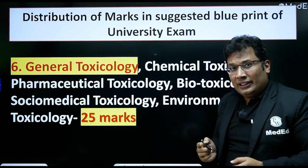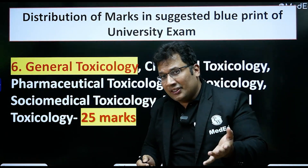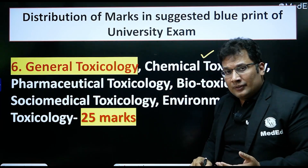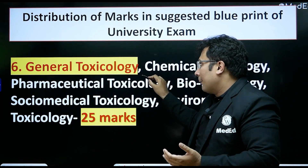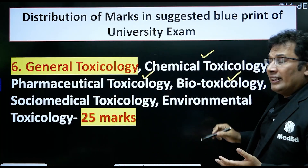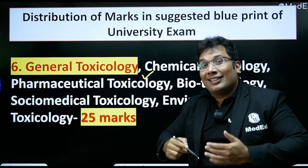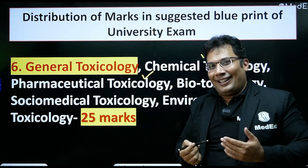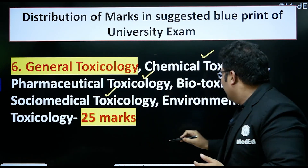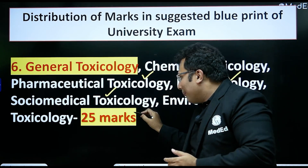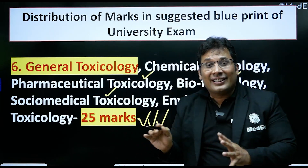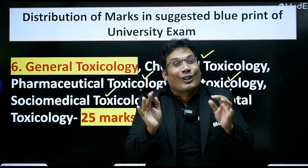Toxicology accounts for around 20 to 24 percent. It includes chemical toxicology, pharmaceutical toxicology (like paracetamol poisoning), biotoxicology (like snake bite and its treatment), socio-medical toxicology, and environmental toxicology — basically around 25 marks. This is the theory blueprint of forensic medicine.